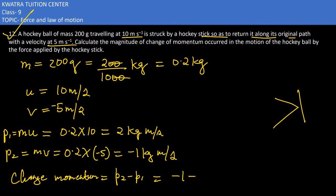So what is p2? Minus 1. Minus p1, and p1 is 2, so you get minus 3 kg meter per second.